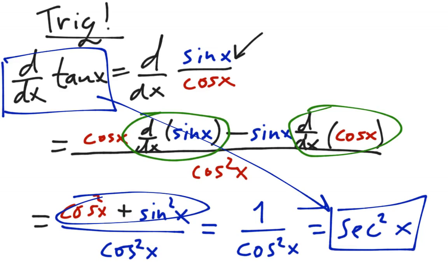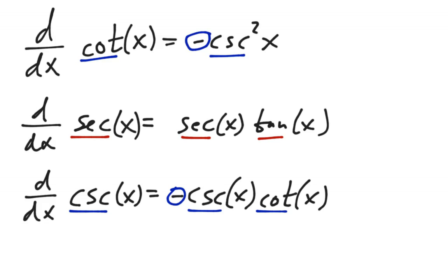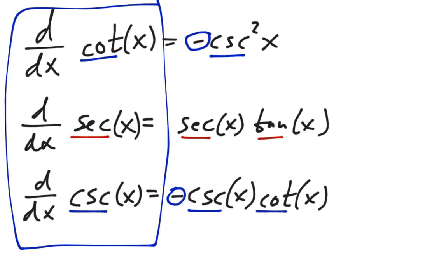The other three trig derivatives are all similar and all use the quotient rule — working those out is part of your homework, and they're on the next slide. Notice that cotangent and cosecant always go together in these derivatives, and secant and tangent always go together. Also, cotangent and cosecant both have a negative sign. Use flashcards or remember you can always re-derive them from the quotient rule — it takes a bit more time but always works.